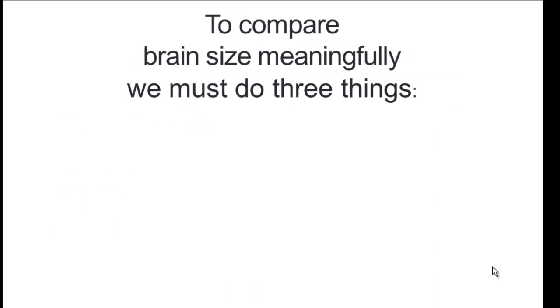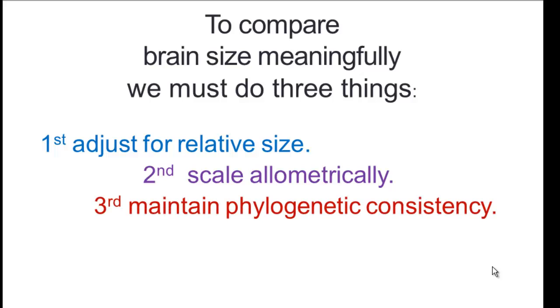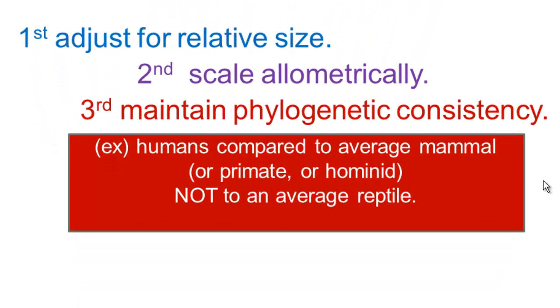So to compare brain size meaningfully, we must do three things. Adjust for relative size, scale allometrically in doing that. And third, we have to maintain phylogenetic consistency. And we're going to dispense with this quite quickly. What this means is that we should compare humans, for example, to an average mammal. We could also construct an encephalization index just looking at primates and comparing one primate to another. We could emphasize just hominids and compare humans to the other apes. But we should not try to construct the human EQ in relation to, say, the average reptile. Because that would be a lot less meaningful in any evolutionary sense.